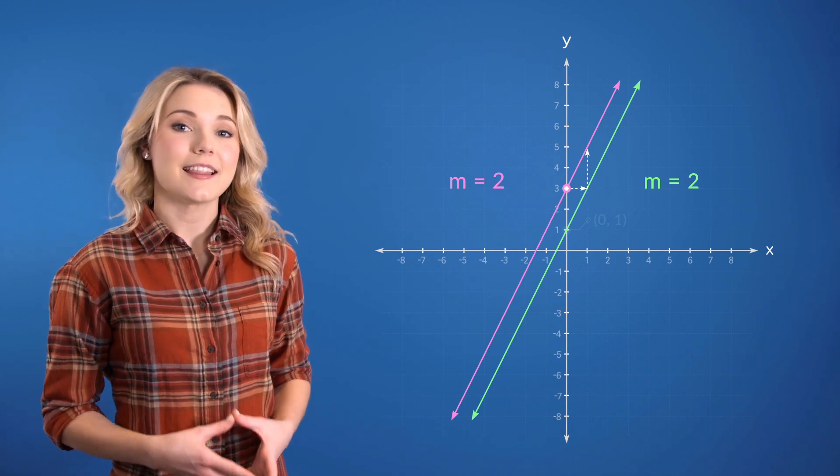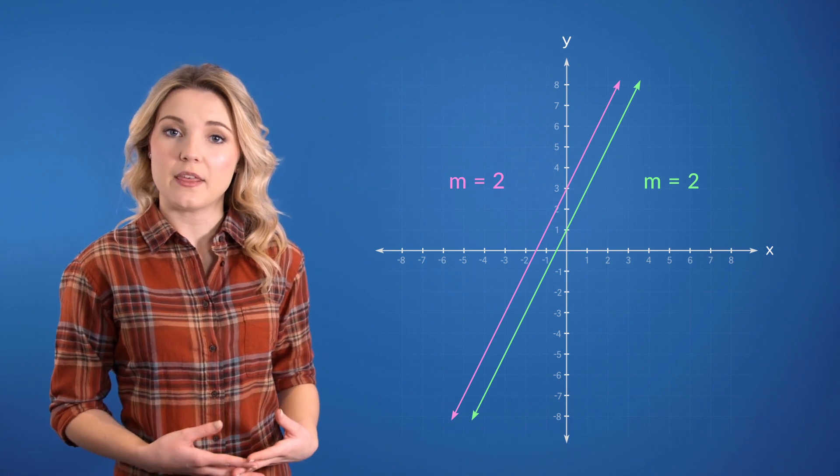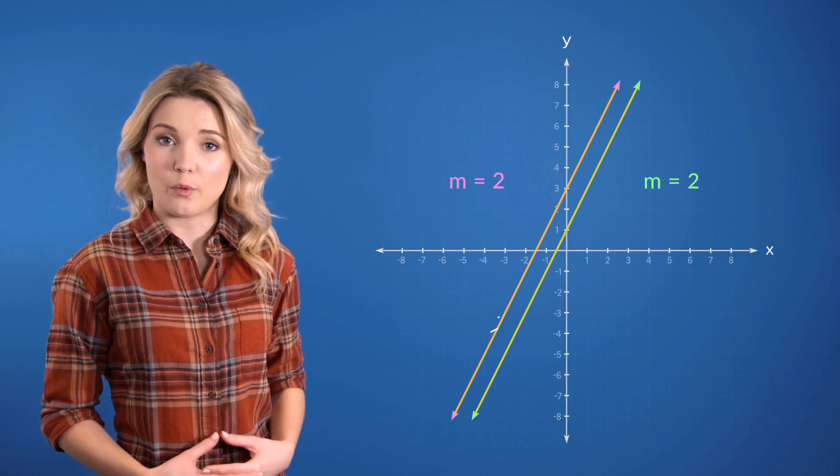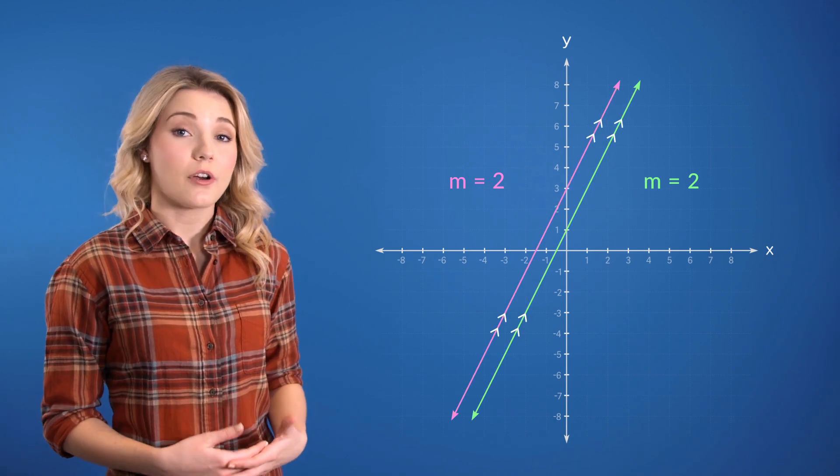Aha! So it looks like these two lines have the exact same slope. Now, it turns out to be the case that, in fact, all parallel lines have the same slope. And this kind of makes sense.